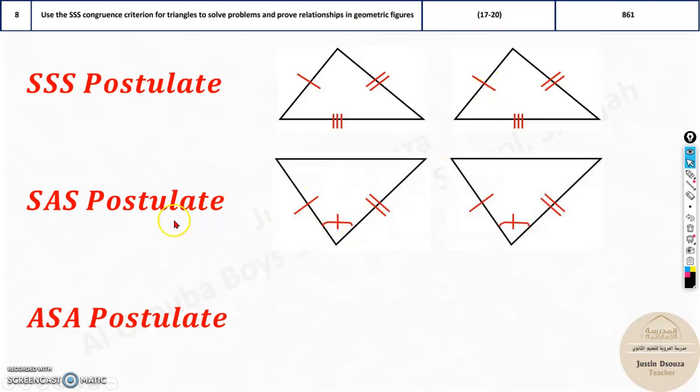Whereas over here, if two sides and they include an angle—a side, then an angle in between them and another side—if these are equal, then again they are congruent.